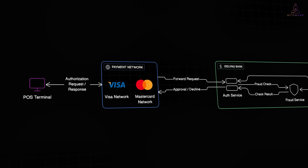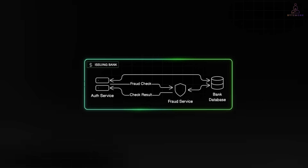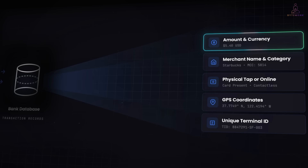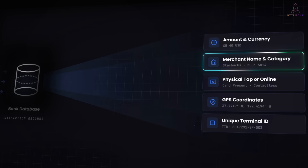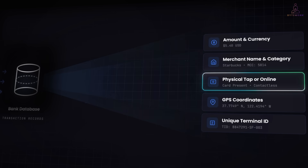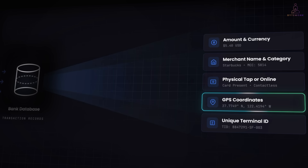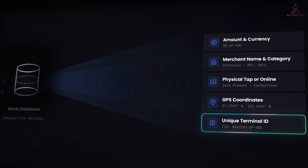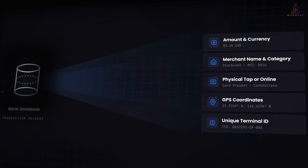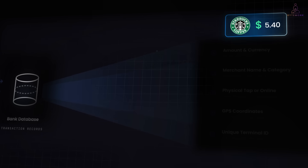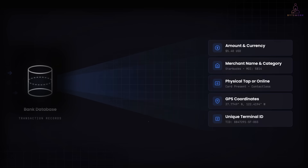Here's the part most people don't realize: your bank actually sees a ton of data about every transaction — the amount and currency, obviously, but also the merchant's name and category, whether you physically tapped the card or typed the number online, the GPS coordinates of the terminal, even a unique ID for that specific card reader. Rich, structured data about every purchase you make. But what do you see? Three days later, your statement shows: Starbucks $5.40. That's it. All that rich transaction data, and you get a one-line summary after the fact.